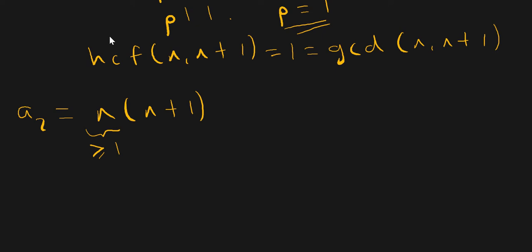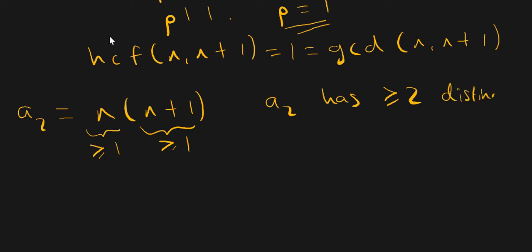So n is going to contribute at least one prime factor, and n plus one is going to have another prime factor which is distinct from the prime factors of n — also contributing at least one prime factor. So in total, a2 has at least two distinct prime factors.